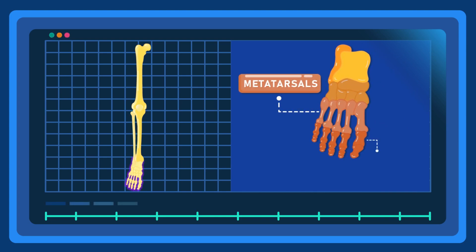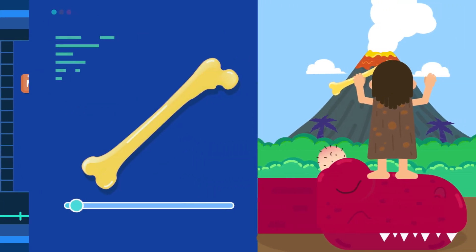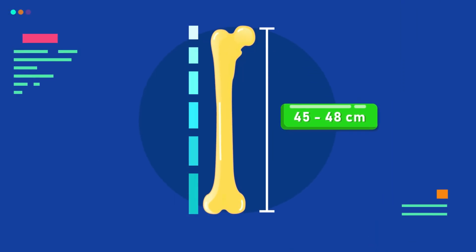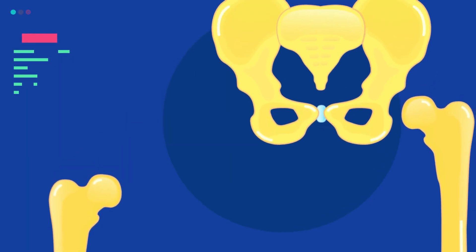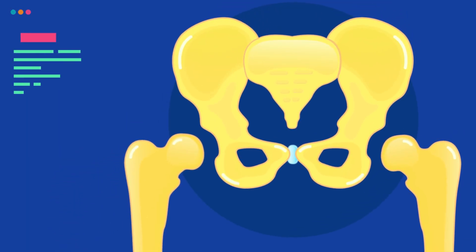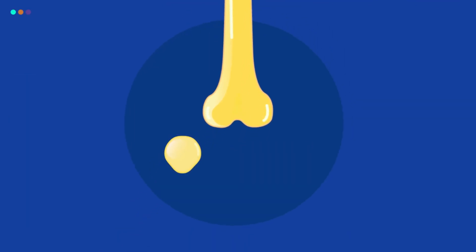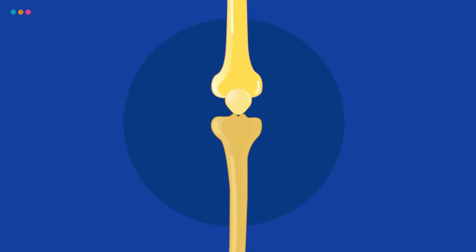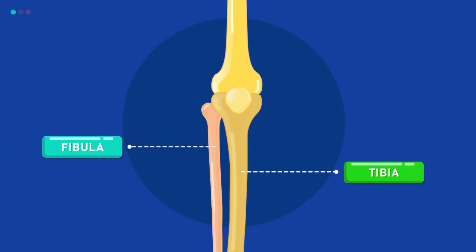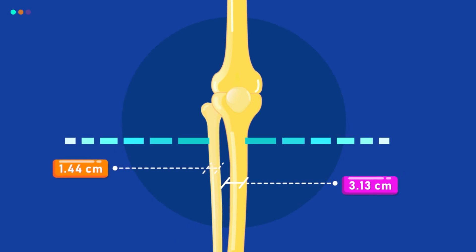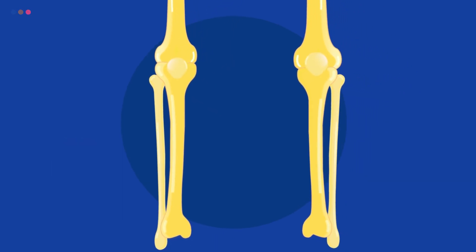Other bones include the metatarsals and phalanges. The femur is the strongest bone in the body and also the longest. The top of the femur connects to a hollowed-out part of the hip bone called the acetabulum. The patella, commonly known as the kneecap, interacts with the bottom of the femur. The femur also has knobs that interact with the top of the tibia.